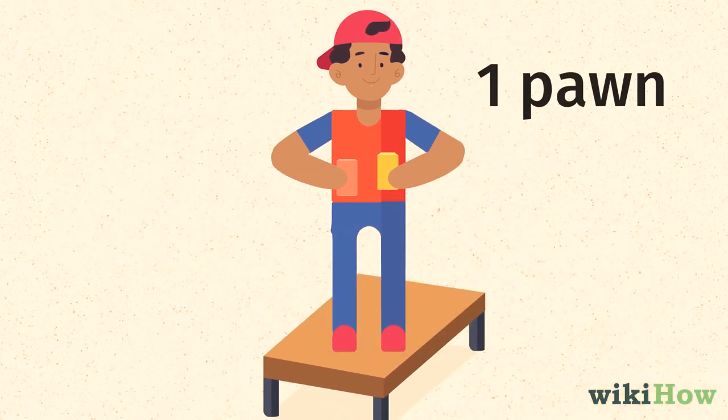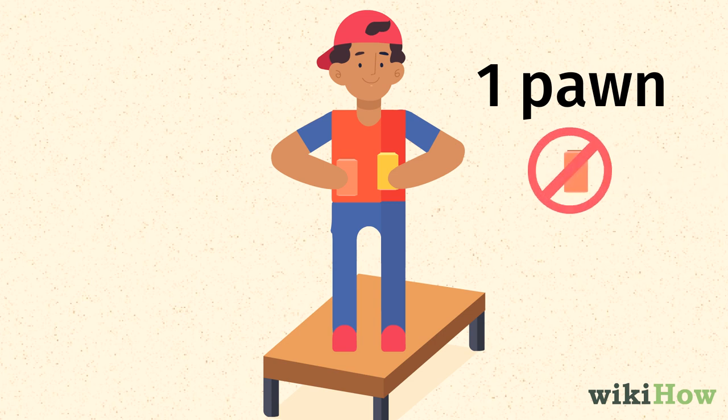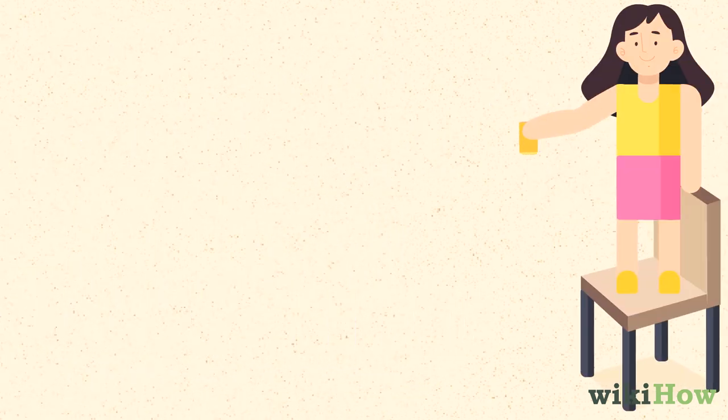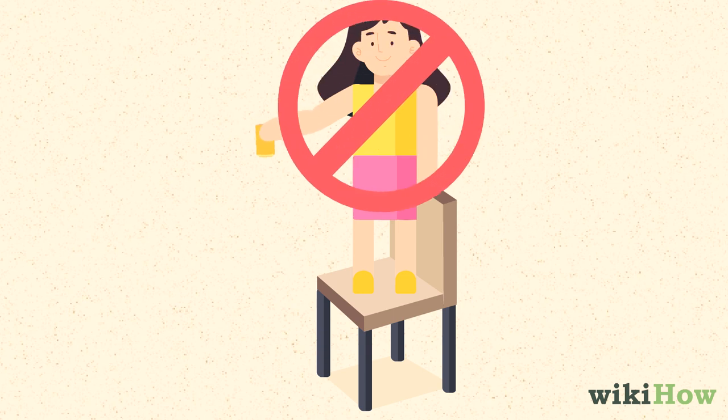Players must always have at least one pawn in their hand, and no more than three pawns. If a player finishes their last pawn, they're out of the game.